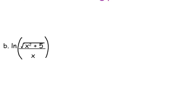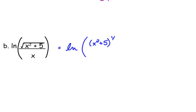How about something that looks like this: the natural log of the square root of x squared plus 5, over x. One thing I'm going to do is rewrite that square root as the one-half power, because I know that I have a power rule and that radicals can be rewritten as exponents.